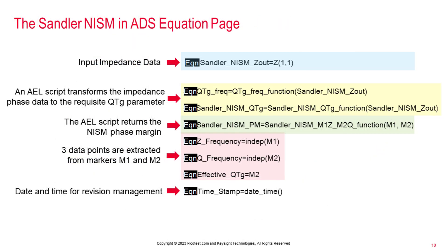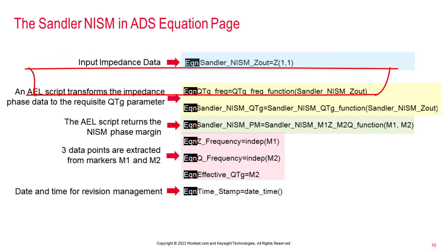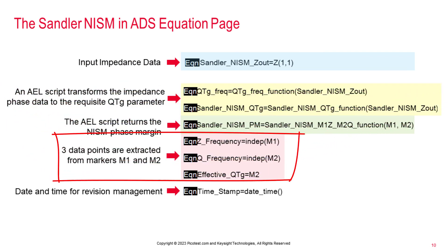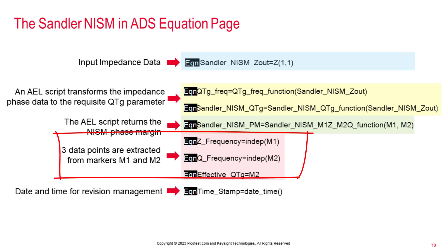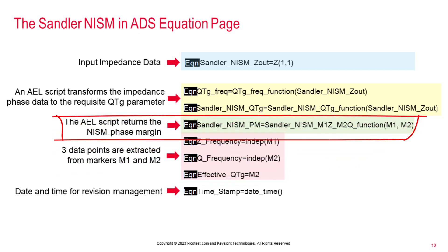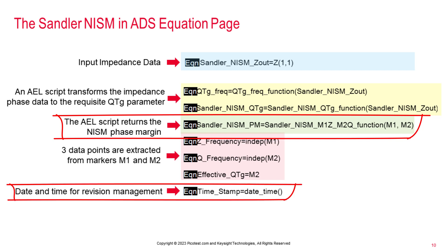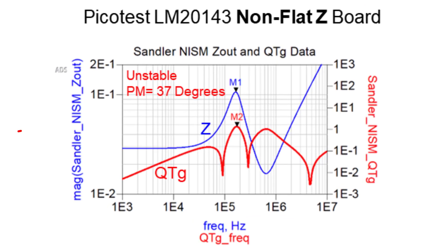The ADS data display template equation page shows that the impedance data is post-processed by an encrypted AEL script. The Sandler NISM AEL script returns a transformed QTG parameter versus frequency. Two markers, M1 and M2, are placed on the appropriate impedance and QTG peaks. The AEL script processes the data and returns the NISM phase margin result. Date and time stamps are created to help with documentation and revision control.